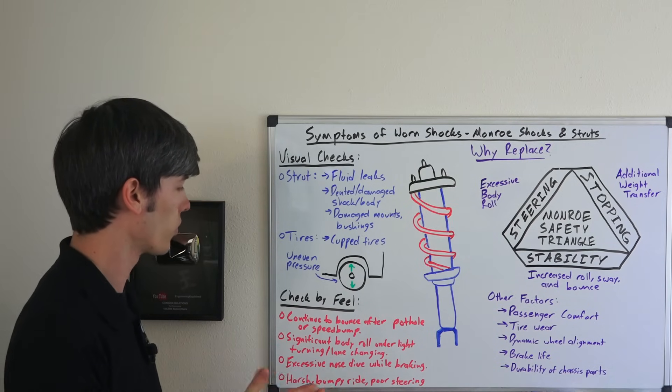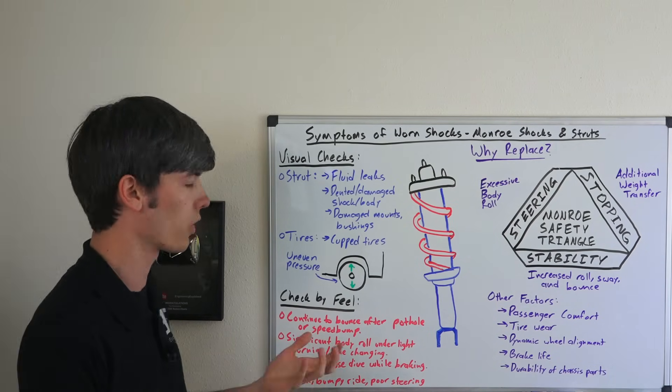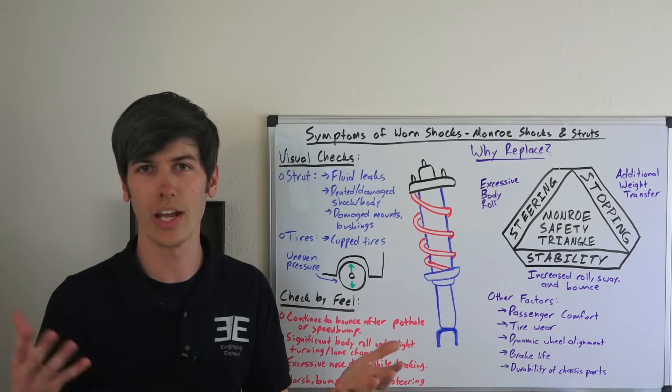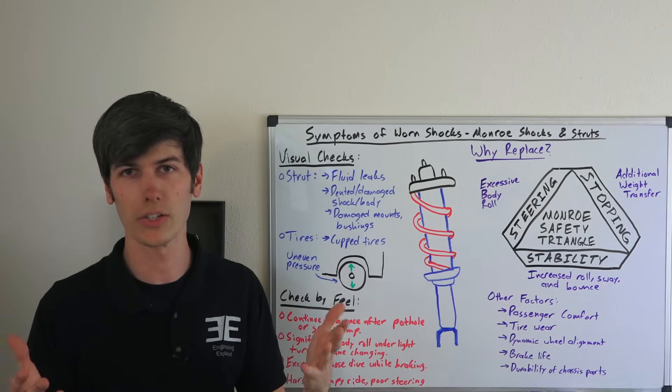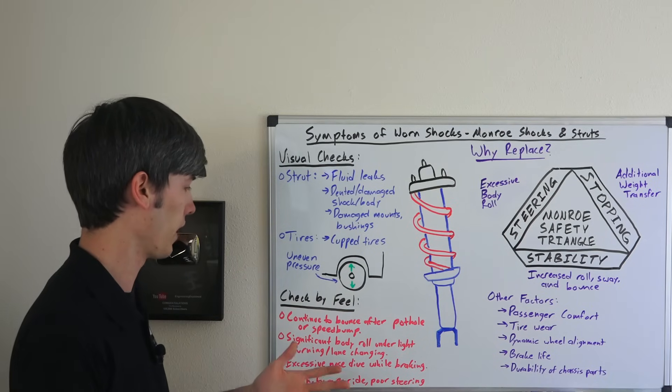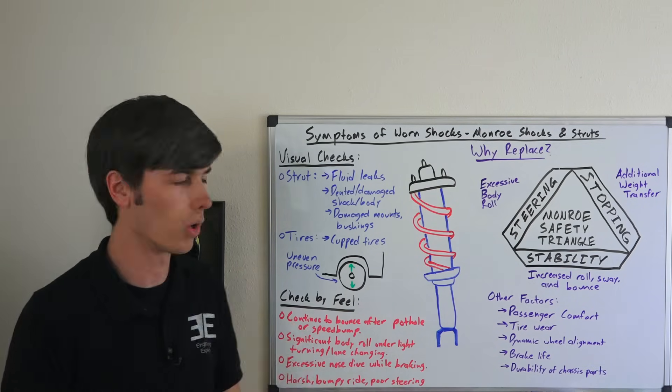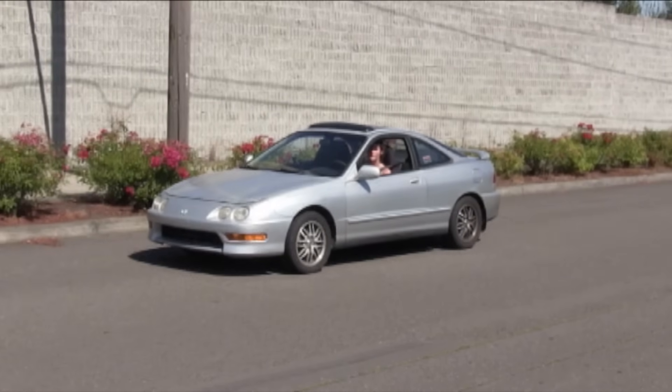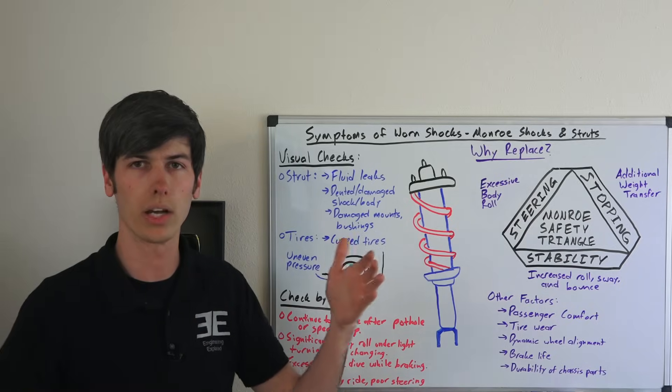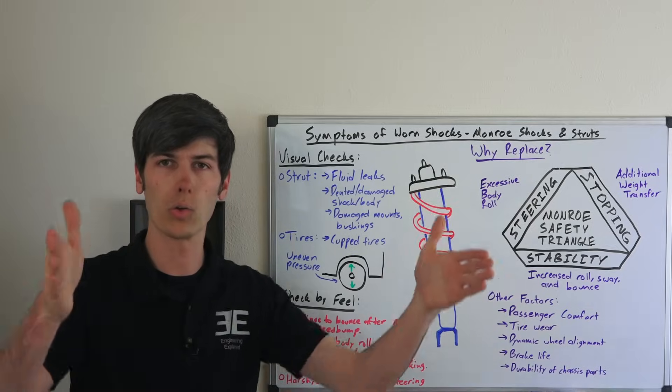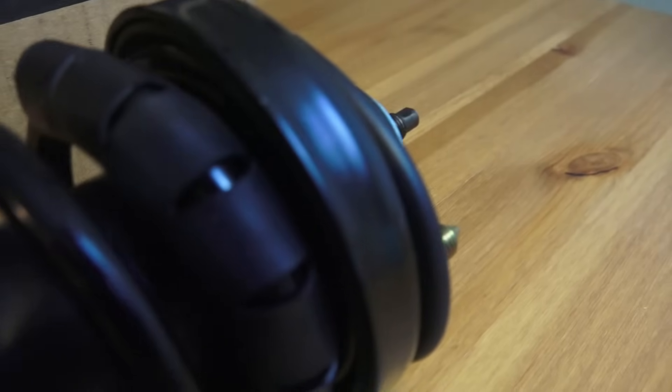Also significant body roll under light turning or lane changing - you shouldn't have too much body roll under light turning or lane changing and that could be a result of a worn shock. Also excessive nose dive - same kind of thing. Excessive nose dive could result if your front or rear shocks were worn out and you just had the whole car kind of shift forward more.